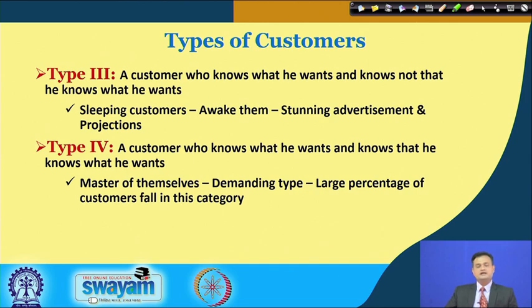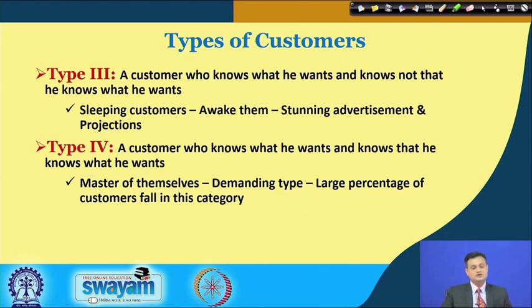Type 3 is a customer who knows what he wants but knows not that he knows what he wants. This kind of customer typically knows what they want, but is not aware that they know it. I would call them sleeping customers — awaken them with stunning advertisements and projections of the product to get their attention, and the product can be successfully sold to them.